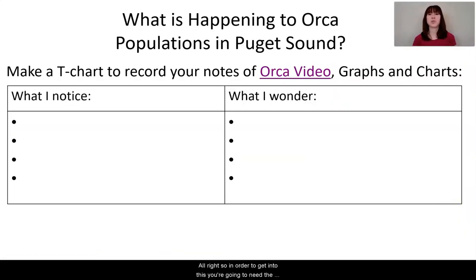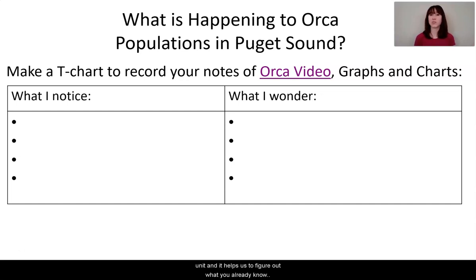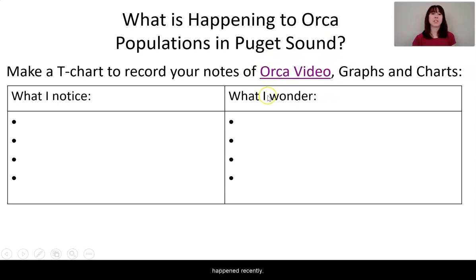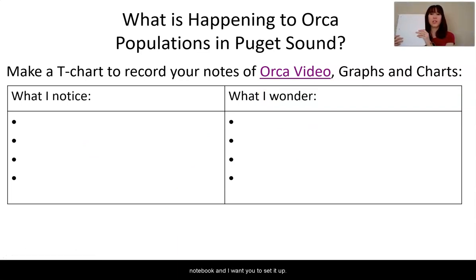To get into this, you're going to need the phenomenon — that puzzling thing you find out about at the very beginning of a unit, which helps us figure out what you already know about a topic. In this case, we're going to figure out what's happening to the orca populations in Puget Sound. I'm going to show you an orca video — it's actually a news video about a recent event — and I want you to make a t-chart that looks like the one on screen. Grab that scrap paper or notebook and set it up now.